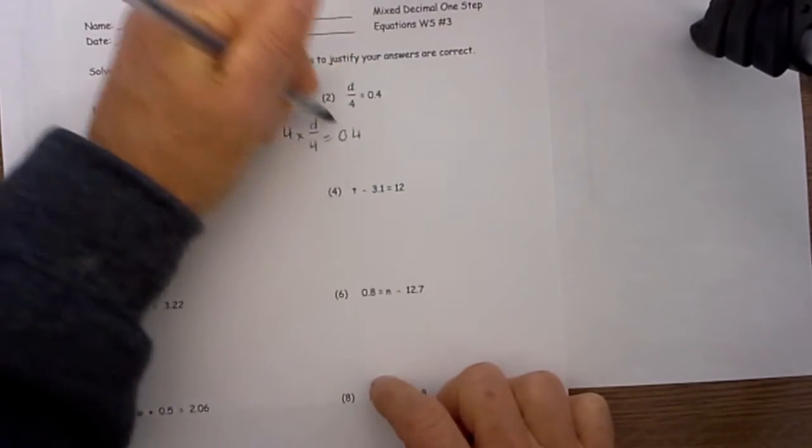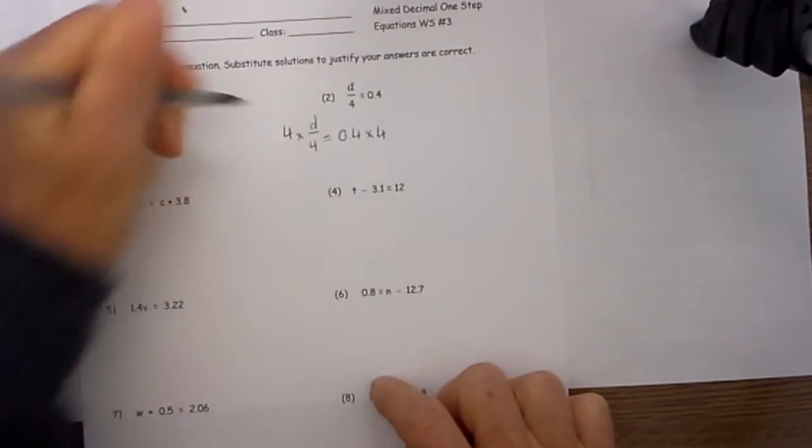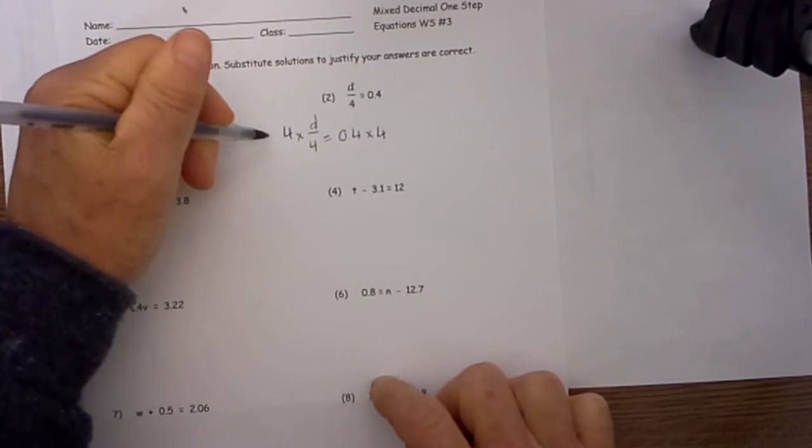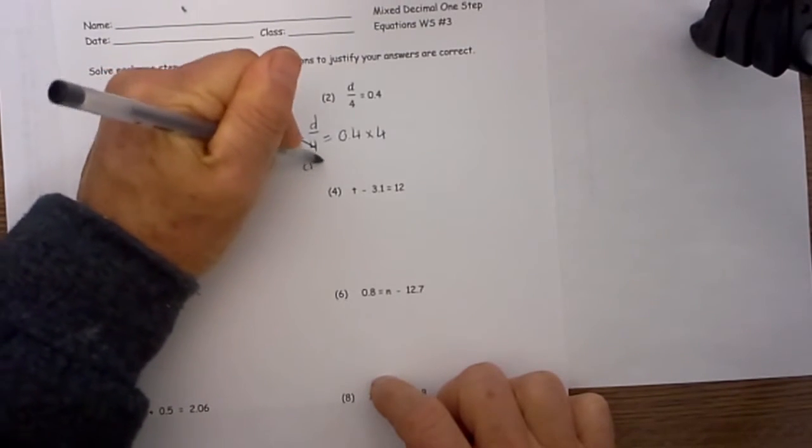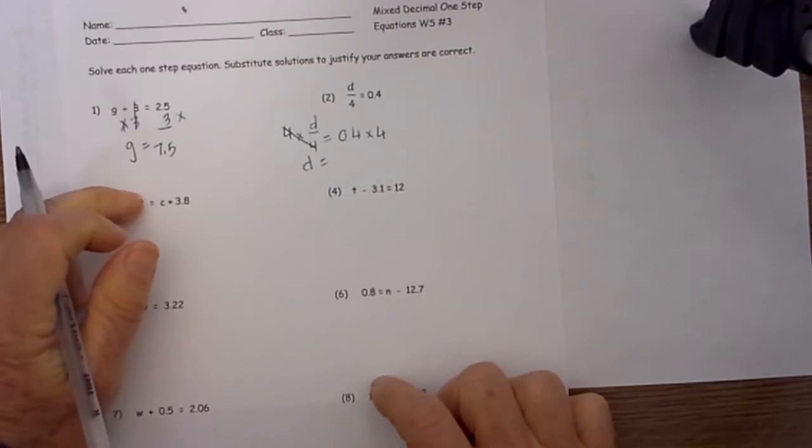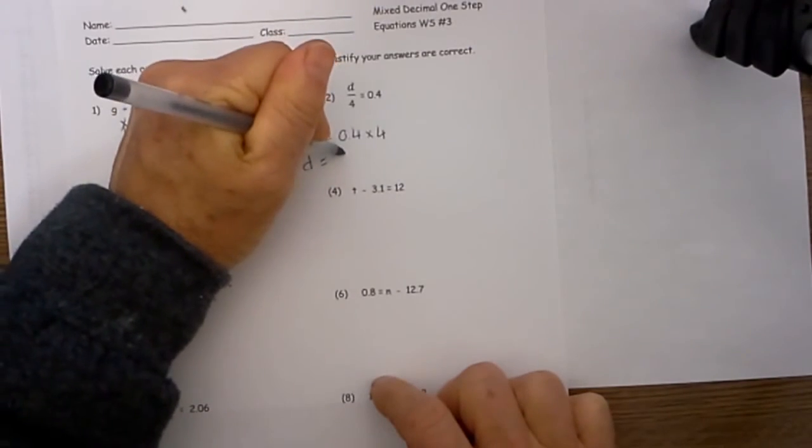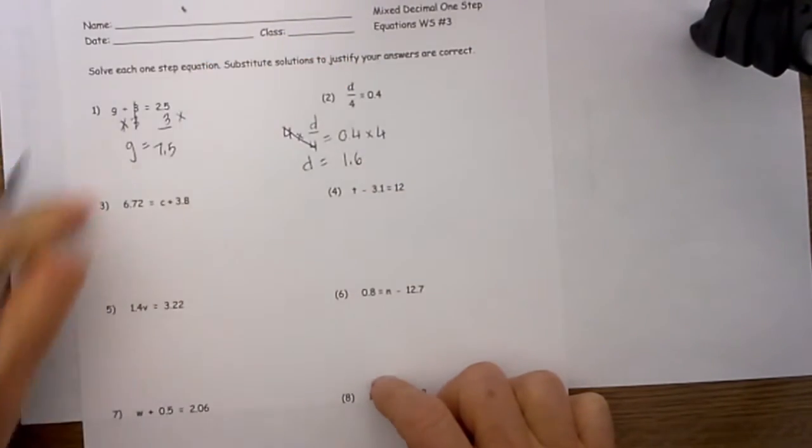On the left we are going to repeat on the right. Multiply the other side by 4. The 4's cancel here. We bring the d down and then 0.4 times 4 is 1.6.